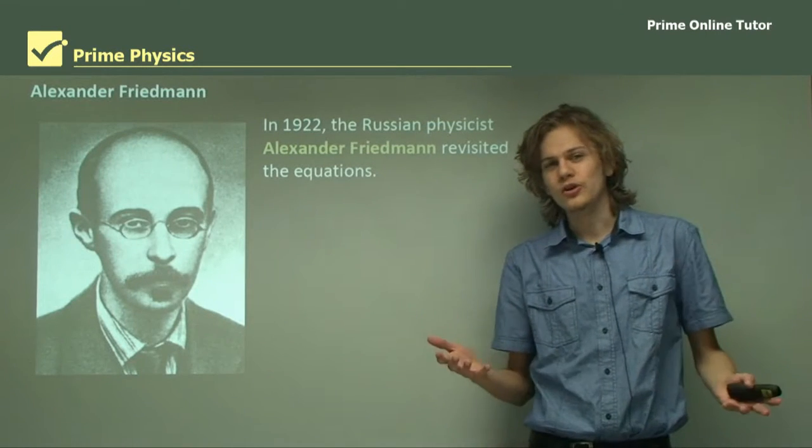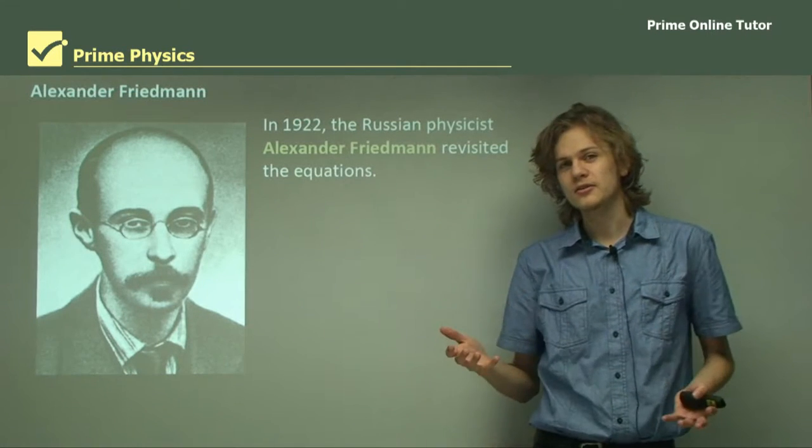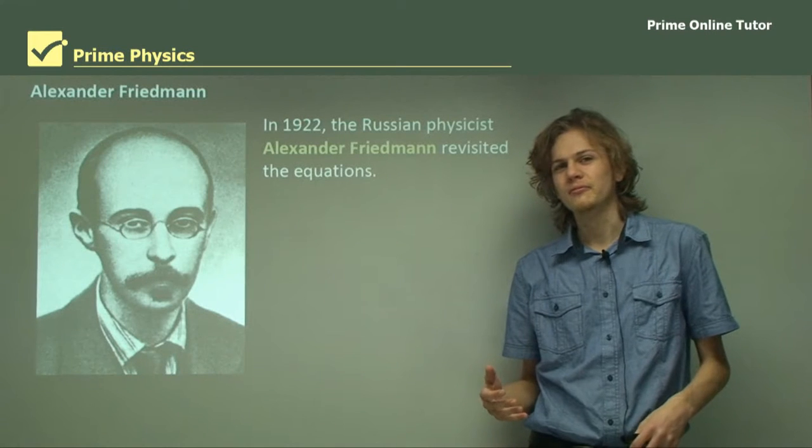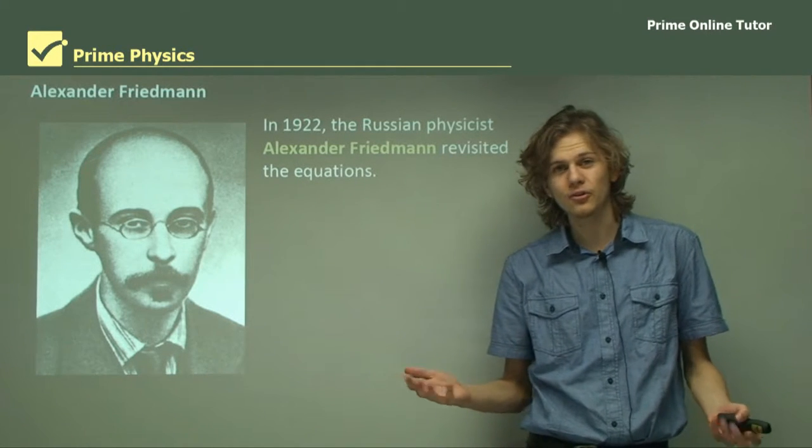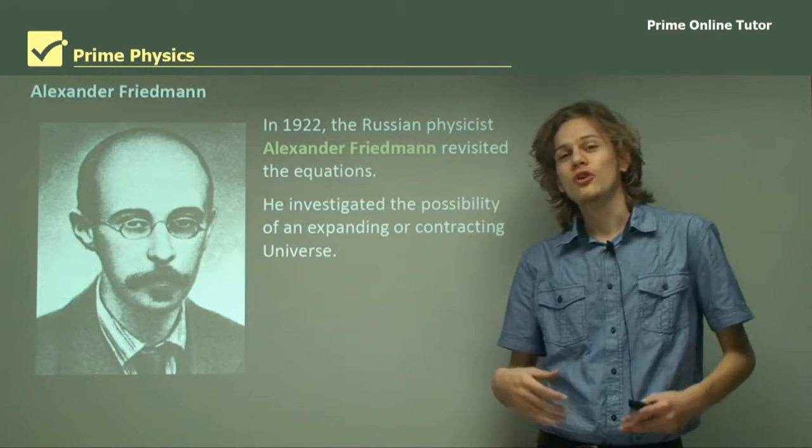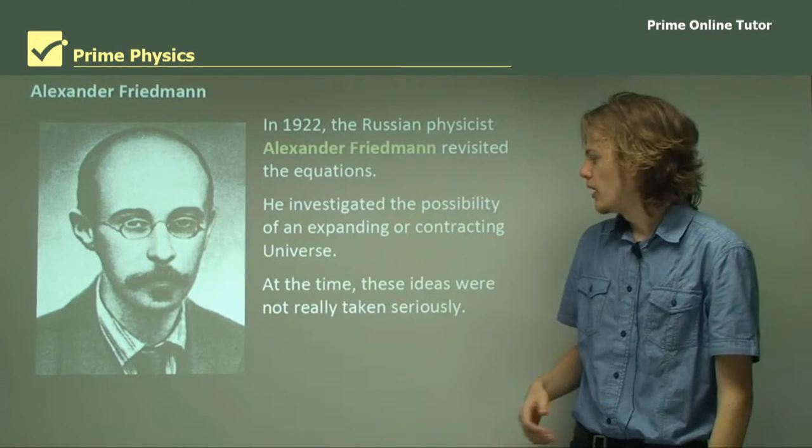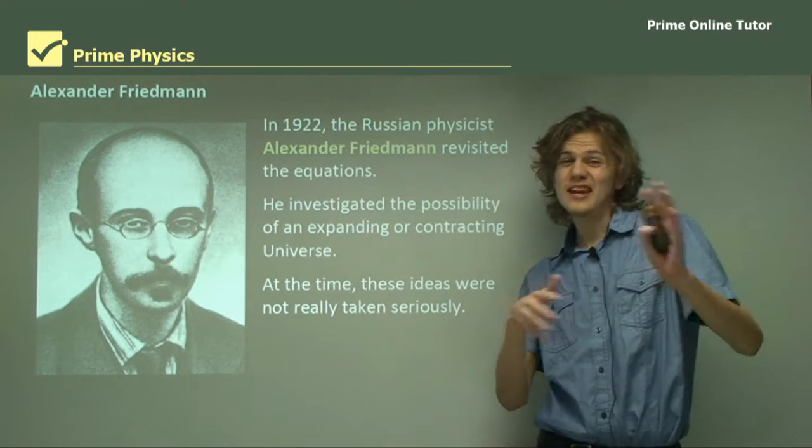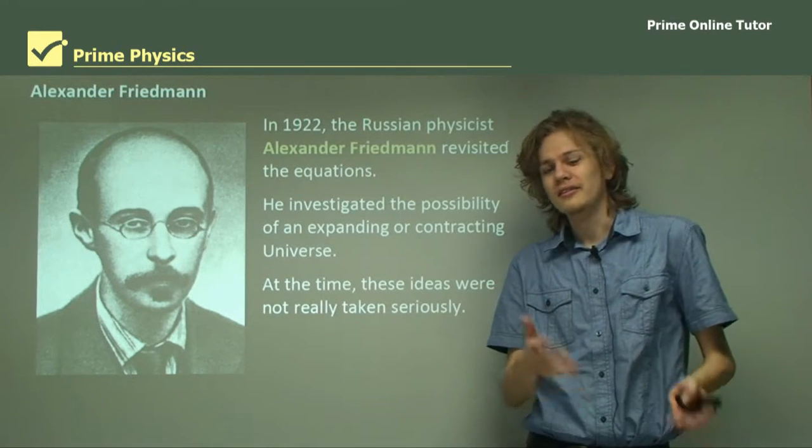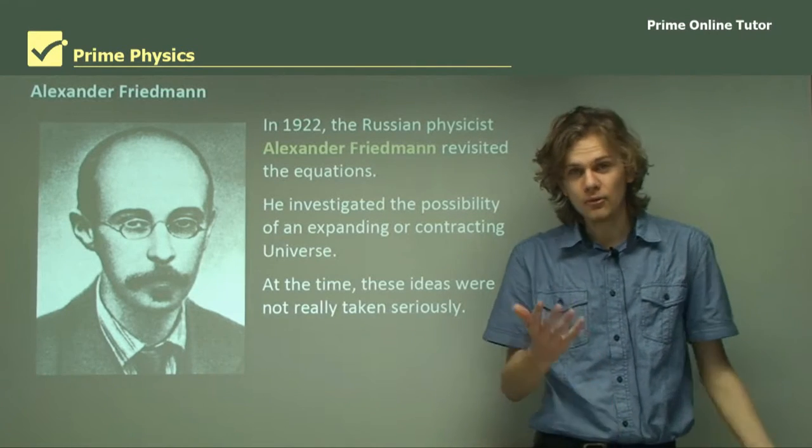In 1922, a few years later, this fellow here, Alexander Friedman, revisited the equations because he wanted to investigate the possibilities, even if he didn't know if there was a basis in reality or not. So he investigated the possibility of a universe that was expanding, getting bigger, or contracting, getting smaller. At the time, these ideas weren't really taken very seriously. I mean, it was an interesting theoretical exercise. But at that time, it wasn't known that they had any basis in reality.